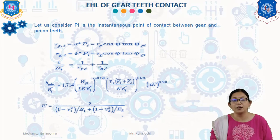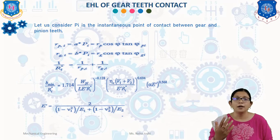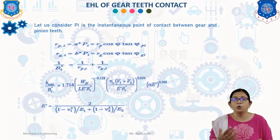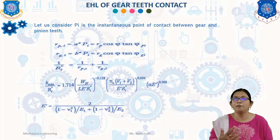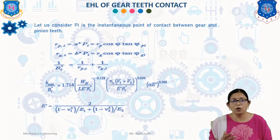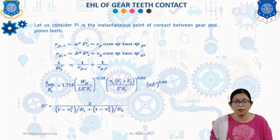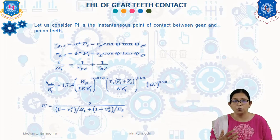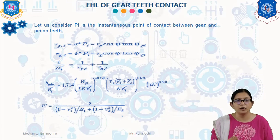The minimum film thickness is given by the equation: H_min / R_pi = 1.714 · (W_n / (L·E'·R_i))^(−0.128) · ((η·(V₁ + V₂)) / (E'·R_i))^0.694 · (α·E')^0.568. Here H_min is the minimum separation between the gear teeth at the micro level, R_i is the radius of curvature of the interface, W_n is the normal load on the gear teeth, and L is the face width. E' = 2 / ((1 − ν₁²)/E₁ + (1 − ν₂²)/E₂). This is what covers the EHL for gear teeth. Thank you all for watching this video.